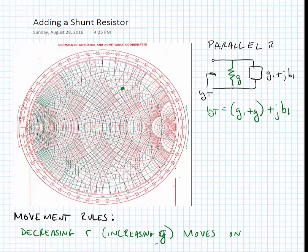If we look at our movement, we move on a line of constant susceptance. As we increase g, it will go towards the short circuit. Note that when we add that conductance, it has no frequency dependence.